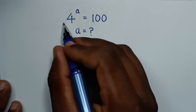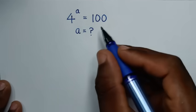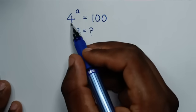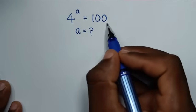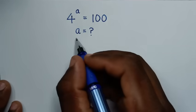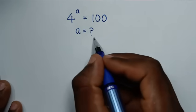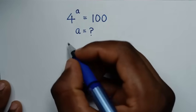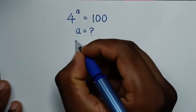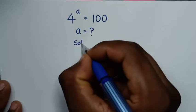You are welcome to solve this math problem: 4 to the power of a is equal to 100. Find the value of a from this equation. Now, solution.